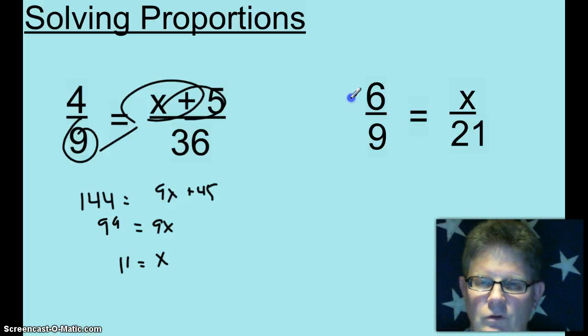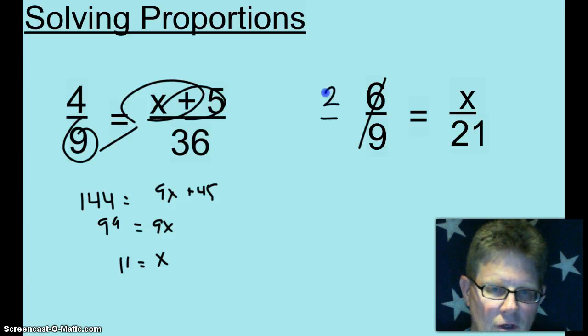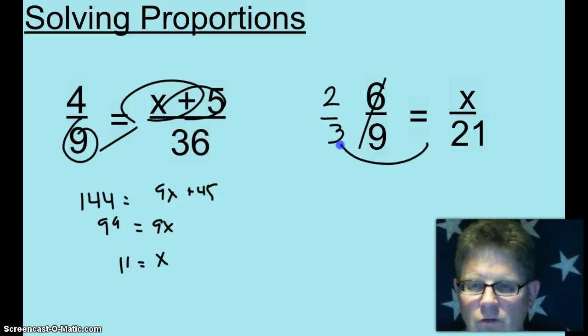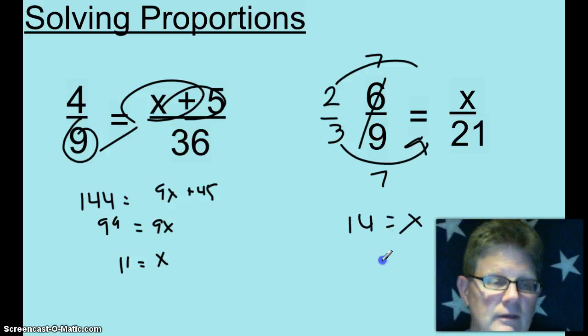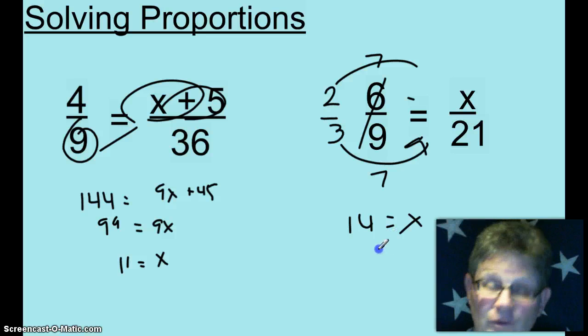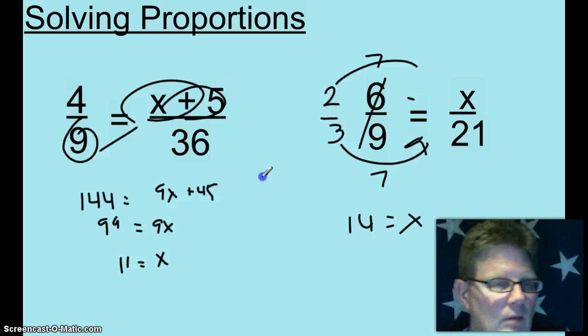Now, sometimes smart cookies will say, you know what, I can reduce that 6/9 to 2/3. And 3 goes into 21 seven times. 2 times 7, 14 equals X. That's another way that you could do that. If you want to just take 21, multiply by 6, divide by 9, and get 14, that's fine and dandy with me. I'm just trying to save you paperwork, save you time. Because I know with my multiplication tables that I can do it quicker than it takes for me to punch it out on a calculator. Choose your poison. It doesn't matter to me.